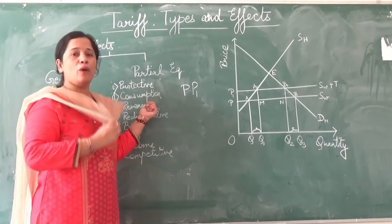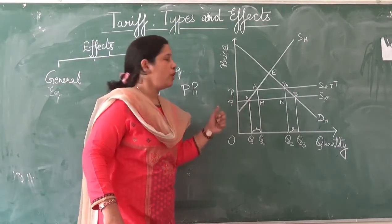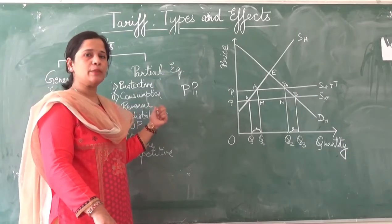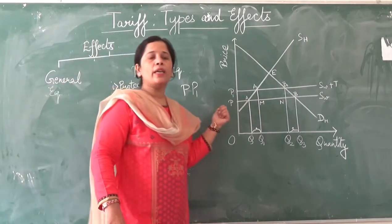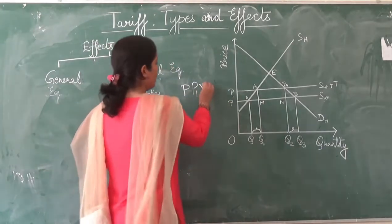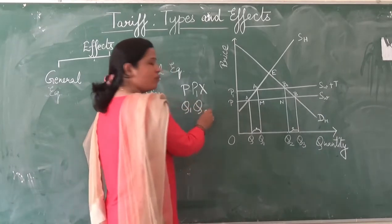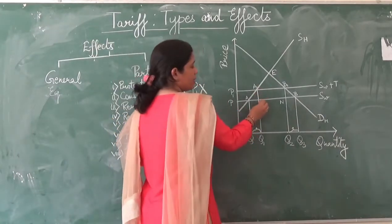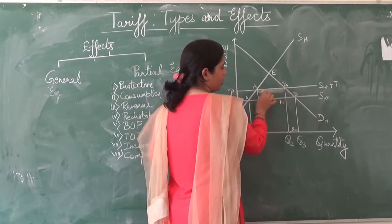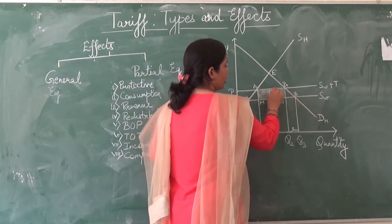The third is the revenue effect — the amount of government revenue earned with the imposition of a tariff. It is calculated by multiplying the tariff rate by the quantity of commodity imported, which is Q1Q2. So the shaded rectangle N, A1, B1, N represents the government revenue — this is the revenue effect.